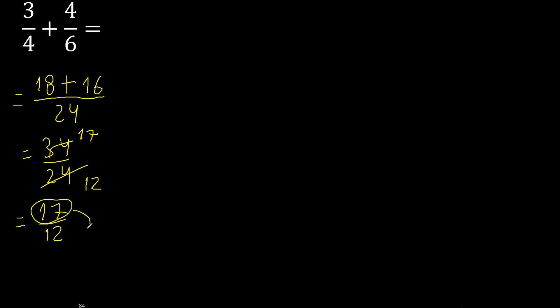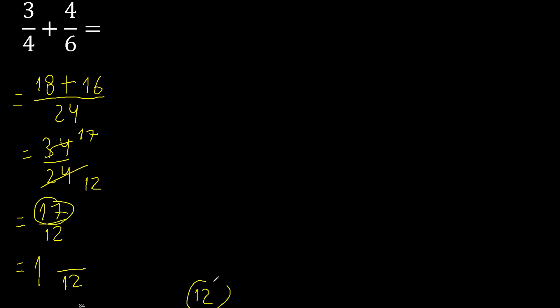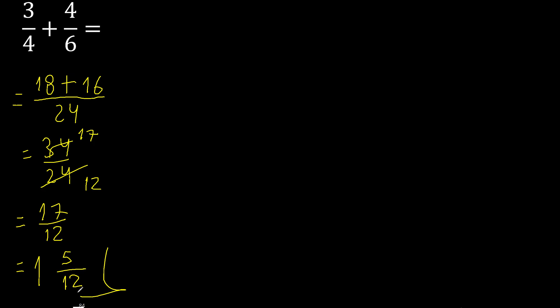But this number is greater, therefore convert. For 12, multiply by which number is nearest to 17 but not greater. 12 multiplied by 2 is 24 — that is greater. 12 multiplied by 1 is 12 — that is not greater. So 17 minus 12 is 5. The final answer is 1 and 5 over 12.